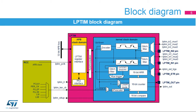The low-power timer is a peripheral with two clock domains. The APB clock domain contains the peripheral's APB interface. The kernel clock domain contains the low-power timer peripheral's core functions, and can be clocked by internal clock sources or from an external clock source through the timer's LP-TIM-IN1 input.